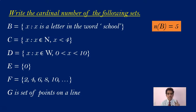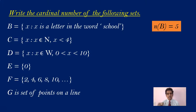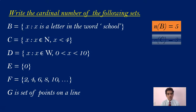Look at C: C = {x | x ∈ N, x < 4}. X is a natural number smaller than 4, so we have 1, 2, and 3. The number of elements is actually 3, so n(C) = 3.